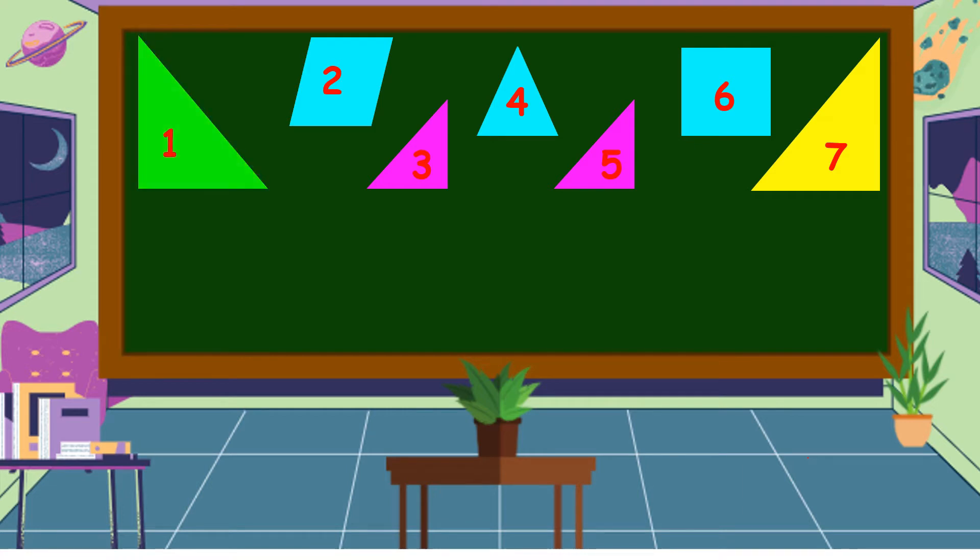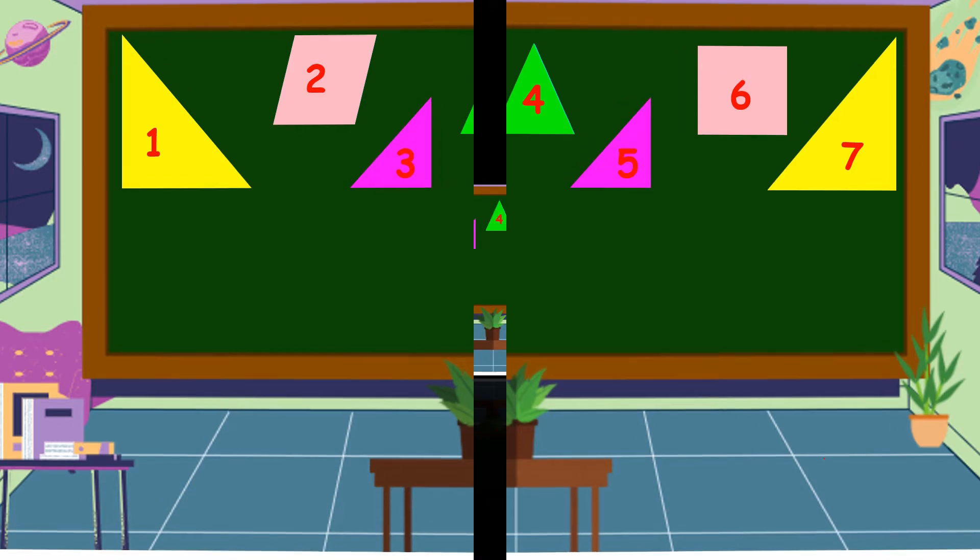Polygons 1, 3, 4, 5, and 7 are all triangles but they do not have the same size. Polygons 2 and 6 are both quadrilaterals but they are not of the same size as well. Therefore, polygons 1 and 7 are congruent polygons as well as polygons 3 and 5.